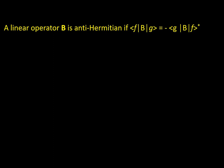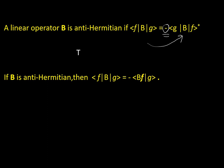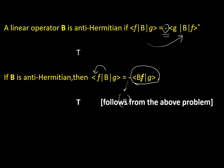A linear operator B is anti-Hermitian if ⟨f|B|g⟩ = −⟨g|B|f⟩*. This is just a matter of definition — if you ignore the minus sign it is the definition of Hermitian; adding the minus sign gives anti-Hermitian. So the statement is TRUE. d/dx is anti-Hermitian: though d/dx is not Hermitian, you can check using this definition that it is anti-Hermitian.